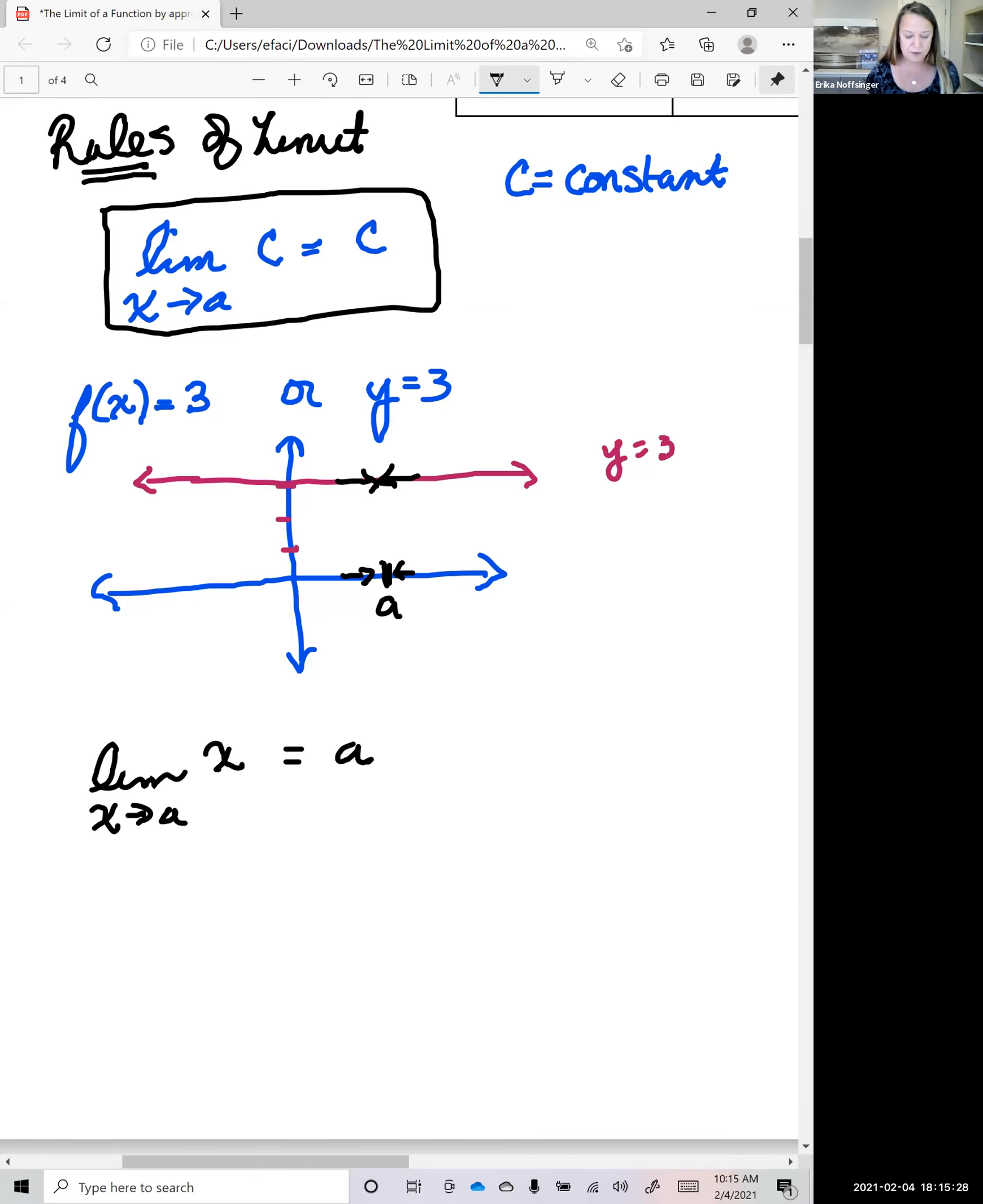And again, if we think about the graph of this, so F of X equals X, or another way to write this is Y equals X. If you look at the graph of that, that's just a line, that's diagonal, that goes through the origin, and whatever value you plug in for X, you get the same value back for Y.